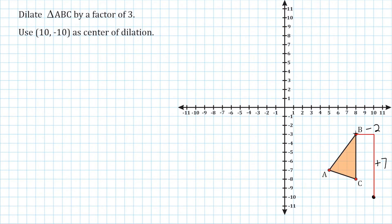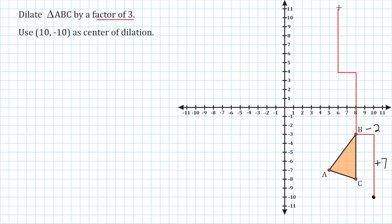Now that we know the rise over run from our center of dilation to point B is seven over negative two, we do the same thing again from point B. The scale factor we're looking for is three. The initial rise over run is scale factor one, the second is scale factor two, and the third is scale factor three. So we go up seven and over two a total of three times, and that location is our new point B, which we label B-prime to show it has been transformed.